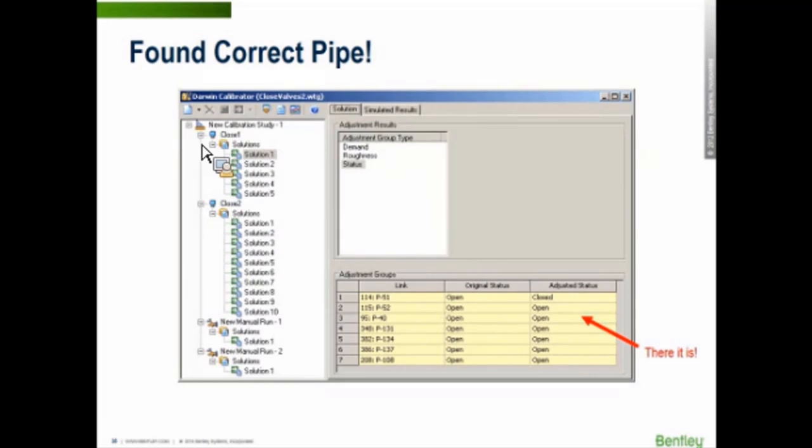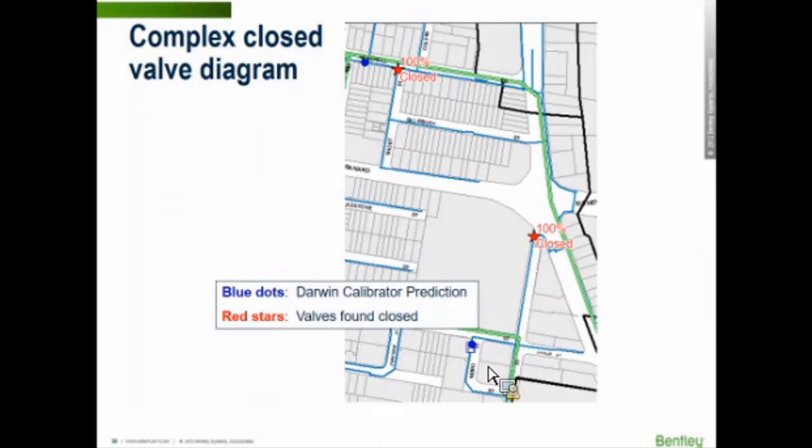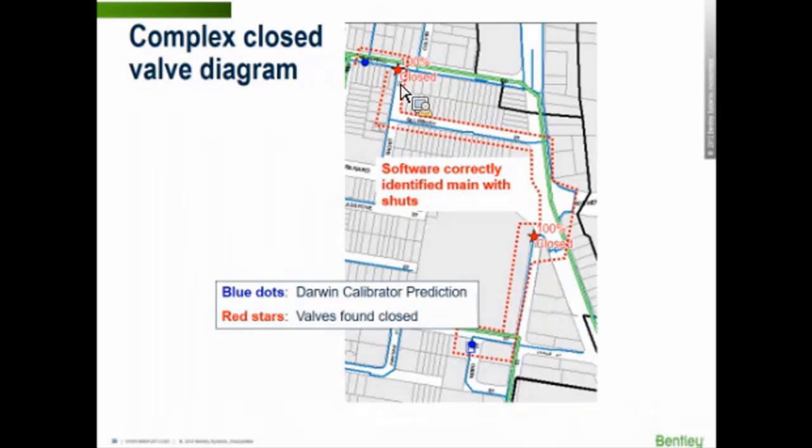When we open up Darwin Calibrator, we're going to see this. We open it up and we're going to see demand and roughness or status. So it's going to be changing the variables for us. Or we can have it just change one of the variables or two of the variables. This is just a kind of graphic showing potentially where a closed valve could be. In this case, the blue dots are the Darwin predicted values. The red stars are valves that were found to be closed during the model. So the software would correctly identify wherever the mains were shut down and just a pipe wasn't having any water flowing through it.